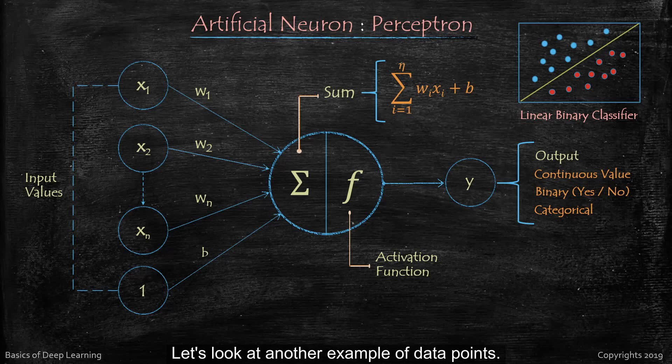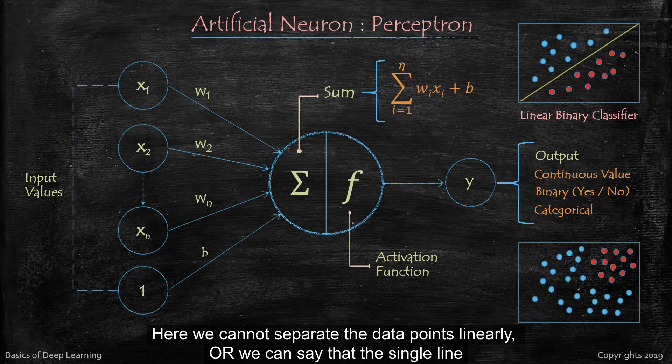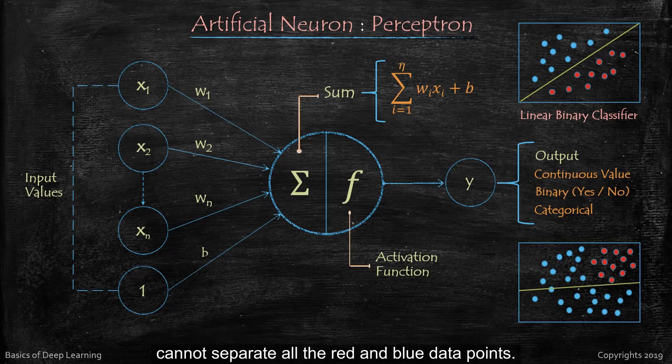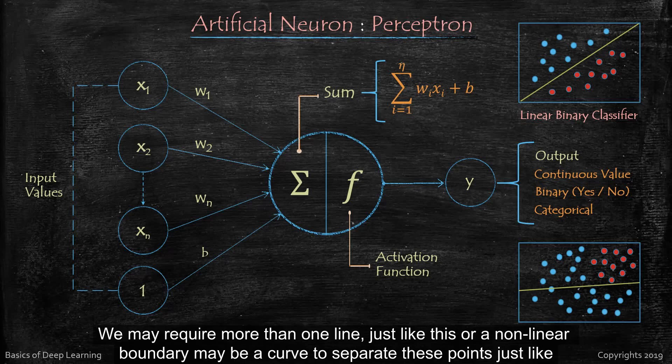Let's look at another example of data points. Now look at this data set here. We cannot separate the data points linearly, or we can say that a single line cannot separate all the red and blue data points. We may require more than one line just like this, or a nonlinear boundary, maybe a curve to separate these points just like this curve.